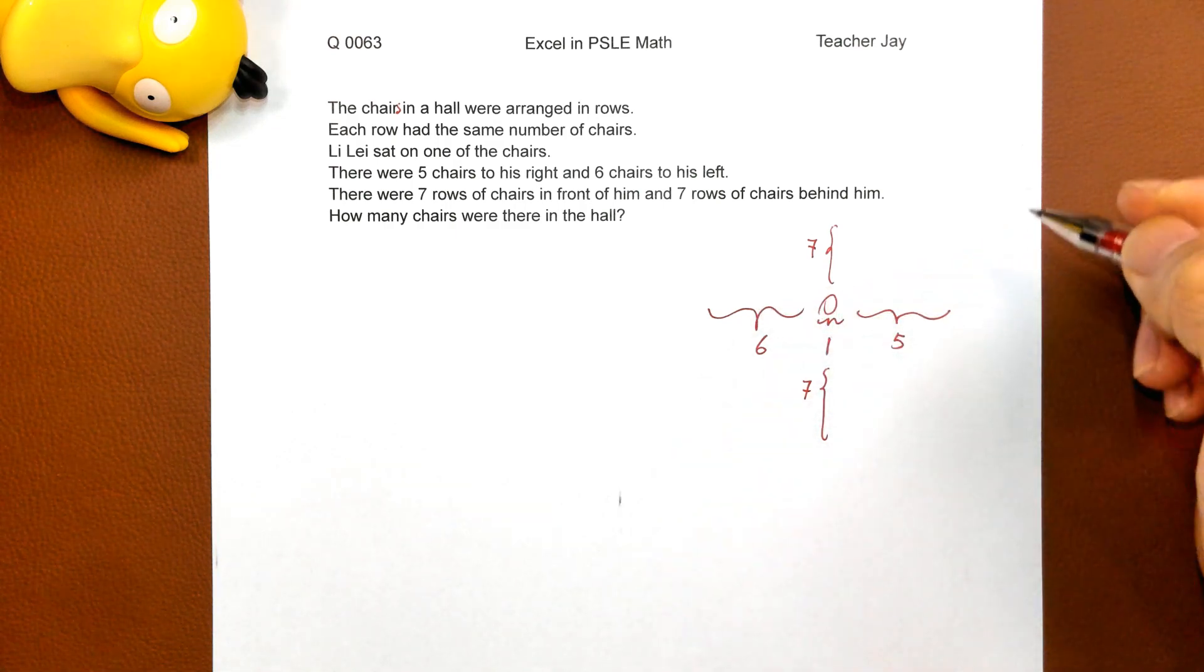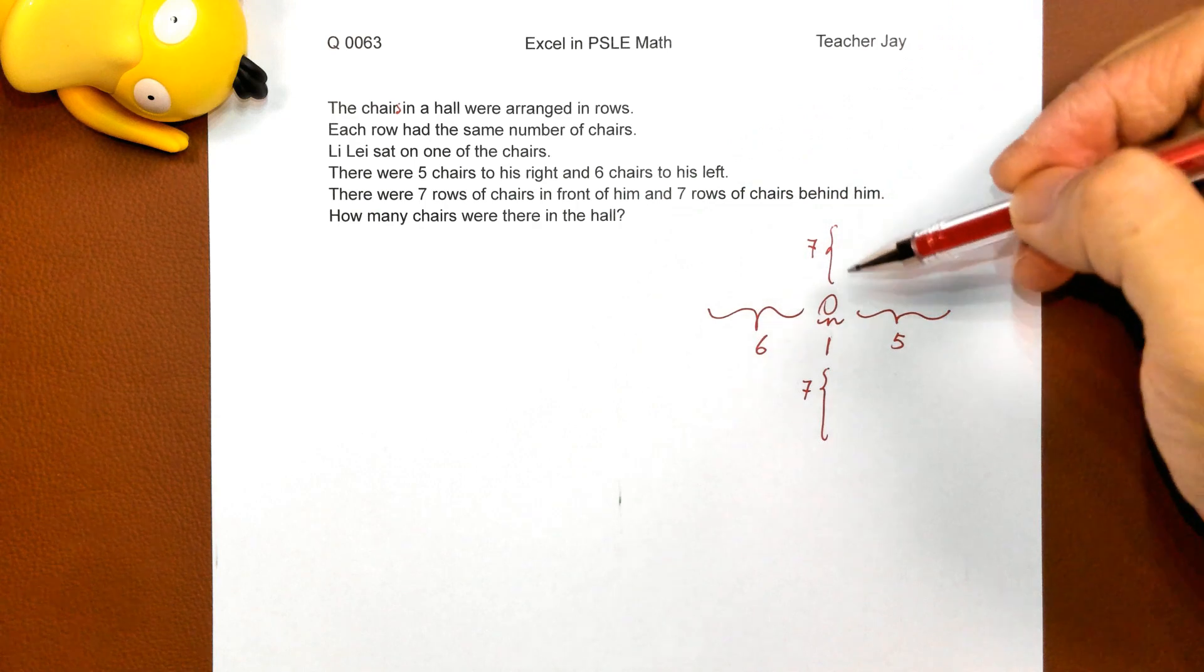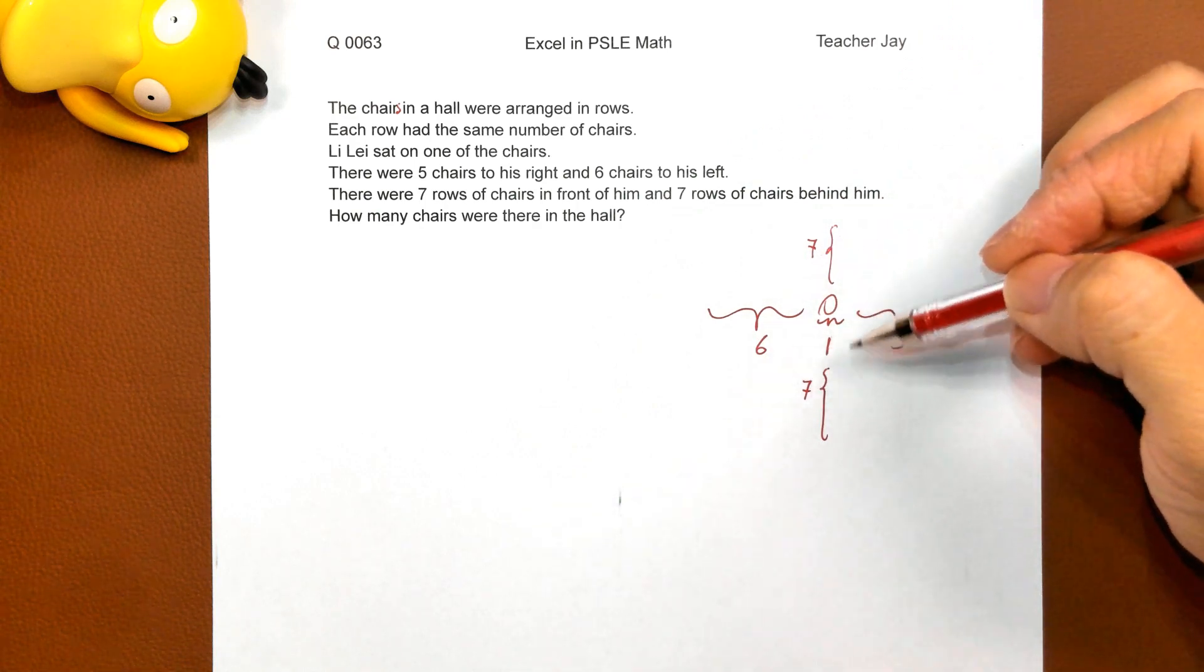And the row where Li-lei was sitting? Seven plus one plus seven equals fifteen rows total.